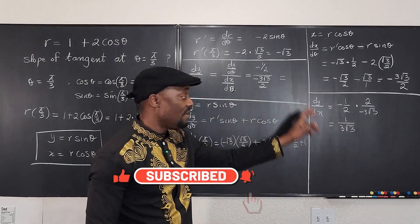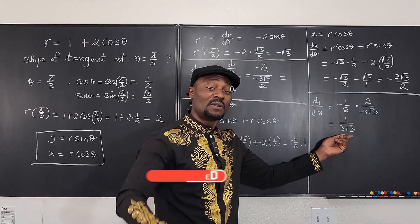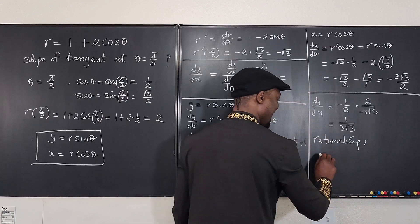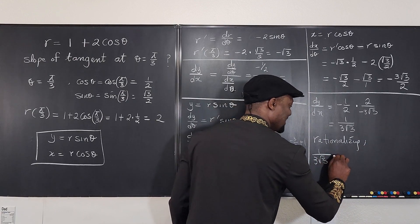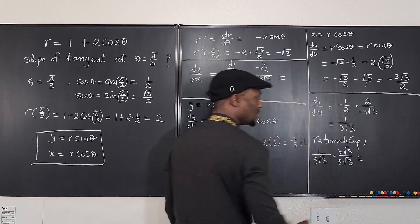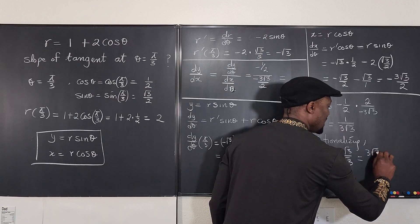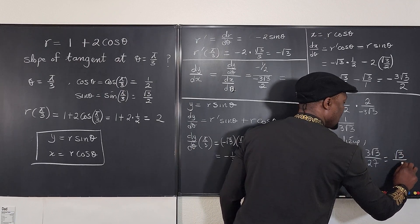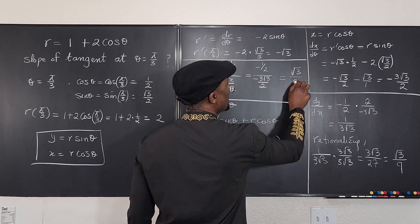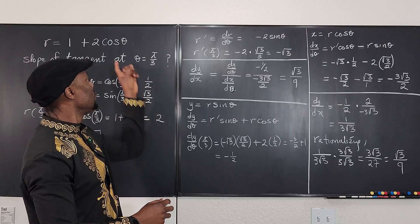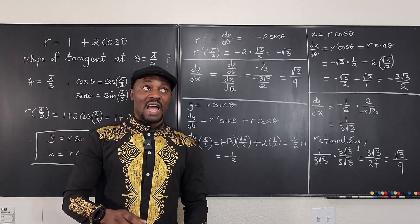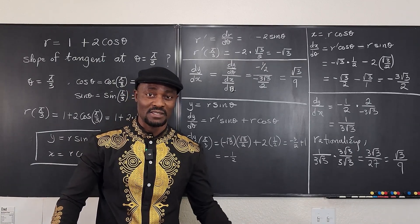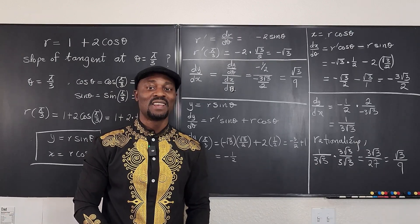So dy/dx equals negative one half divided by negative 3 square root of 3 over 2. Cleaning this up: the negatives cancel and the twos cancel, giving 1 over 3 square root of 3. If you rationalize, multiply by square root of 3 over square root of 3 to get square root of 3 over 9 — that is the slope of the tangent line to this curve at theta equals pi over 3. I hope this was a good source of exercise and you learned something. Never stop learning, because those who stopped learning have stopped living. Bye bye.